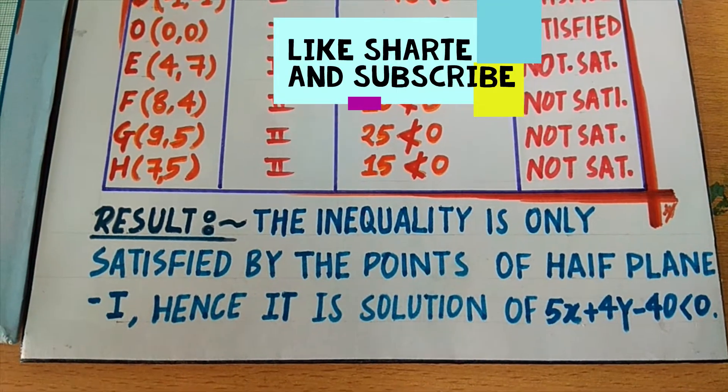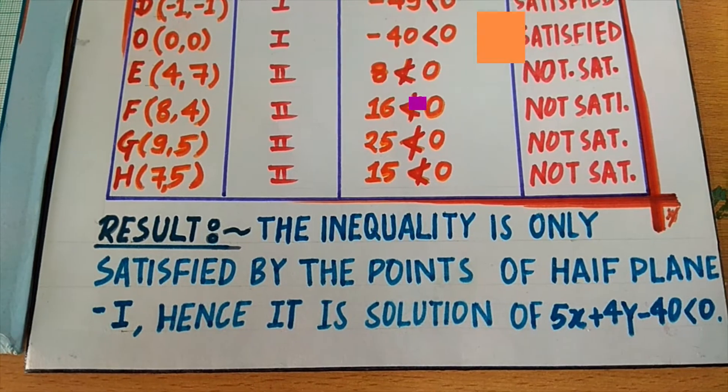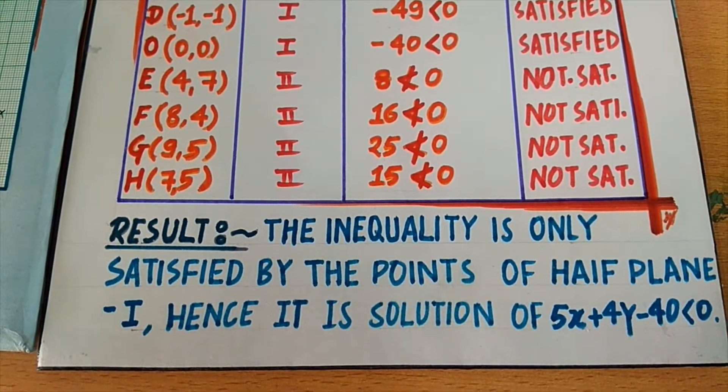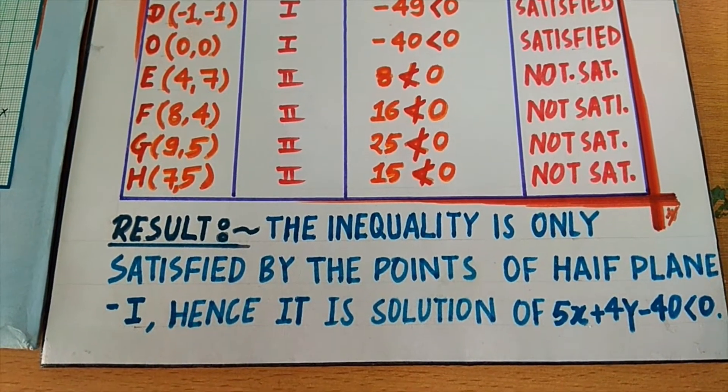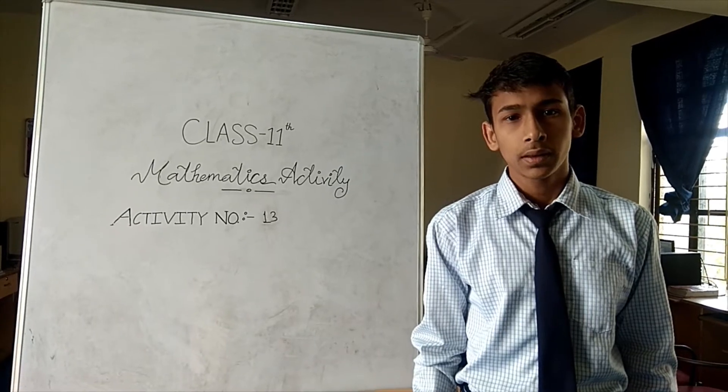So, the result of this activity is the inequality is only satisfied by the points of the half plane first. Hence, it is the solution of inequality 5x plus 4y minus 40 less than 0. Thank you.